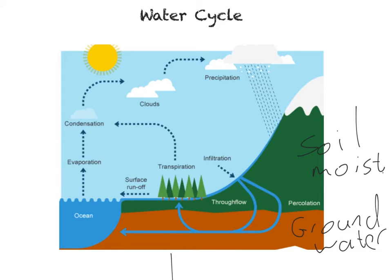Some examples of stores would be soil moisture — water stored in the soil — groundwater, water stored in the rocks, or surface storage, which is water stored on the surface, for example puddles. Some transfers would be infiltration, the movement of water from the surface down into the soil layer, and percolation from the soil layer to the ground. Those are examples of each of the four stages.